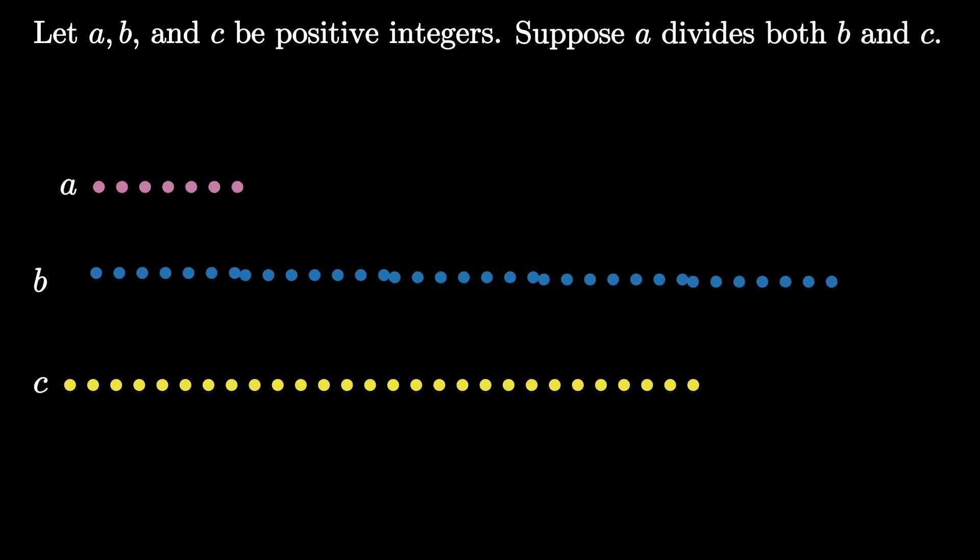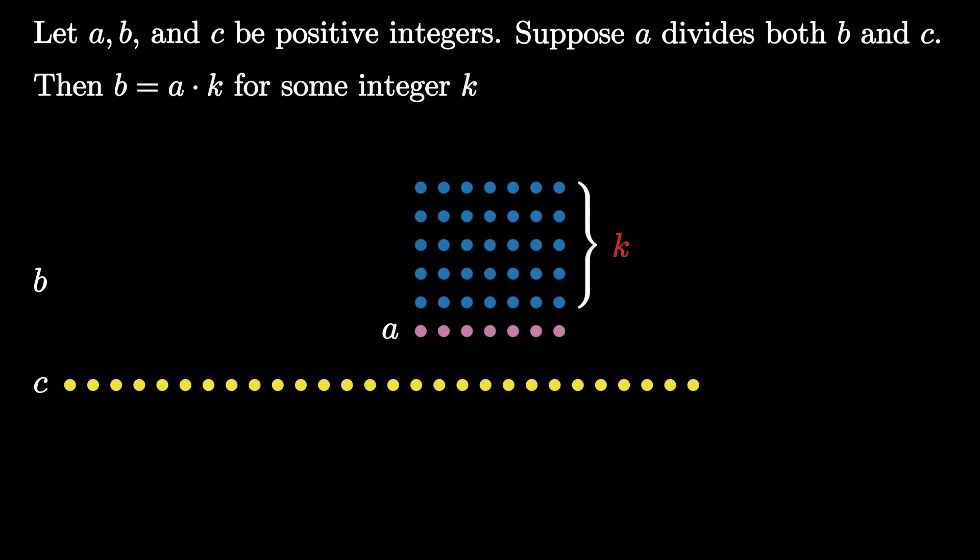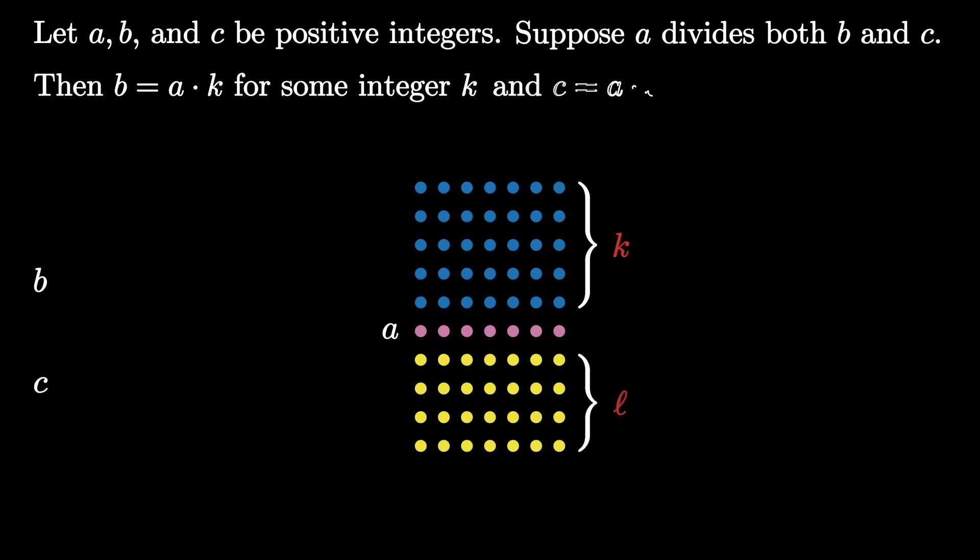This means that b can be arranged as a stack of k rows of size a, and c can be arranged in a stack of ℓ rows of size a. This means that b equals a times k, and c equals a times ℓ. Note that we have used different letters for k and ℓ because they're likely different numbers, though they can be the same.